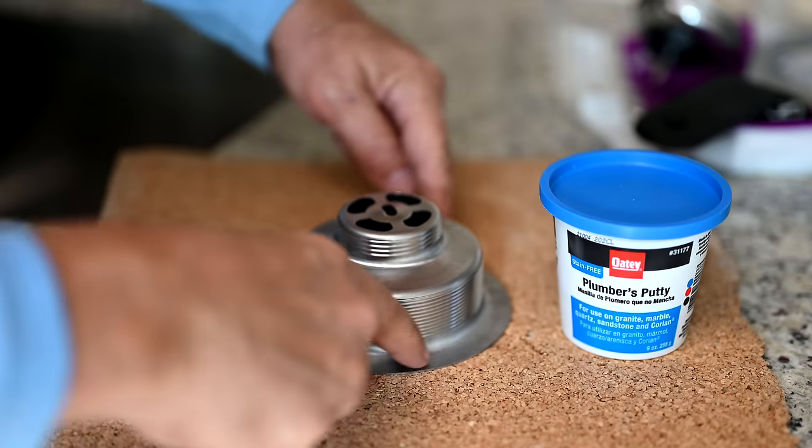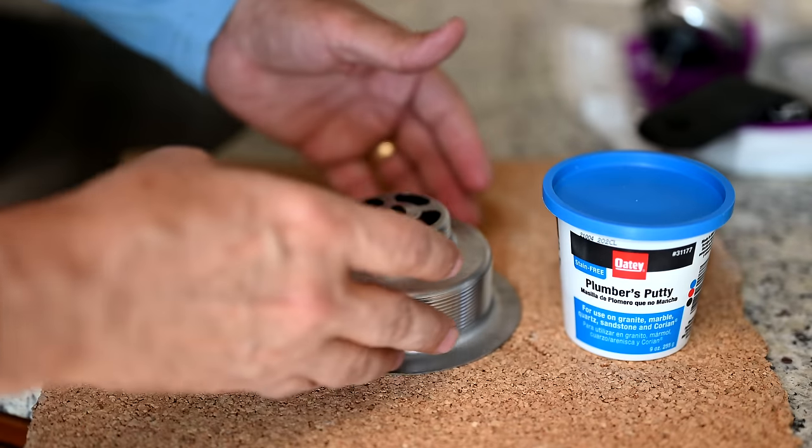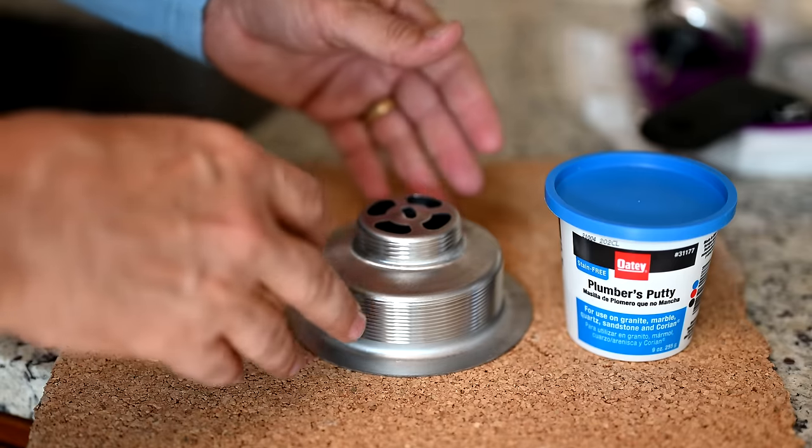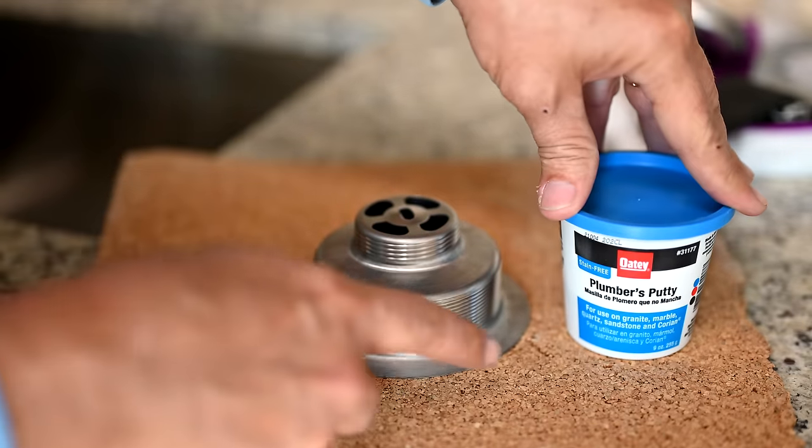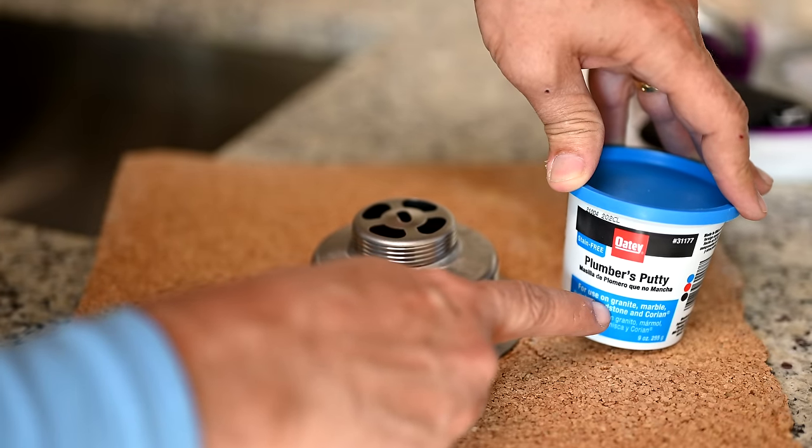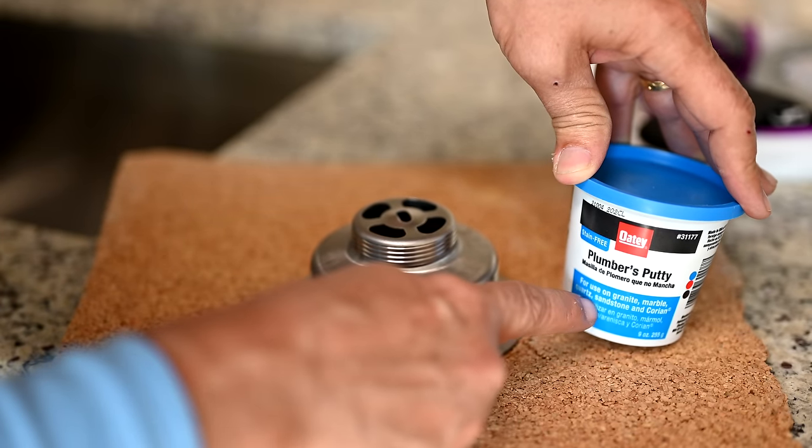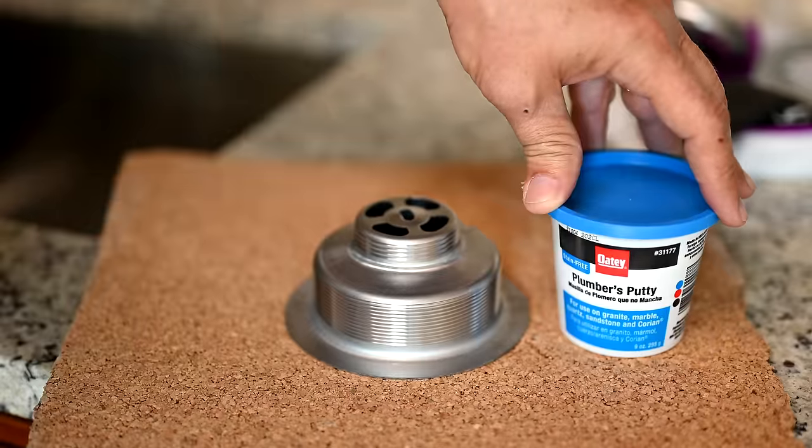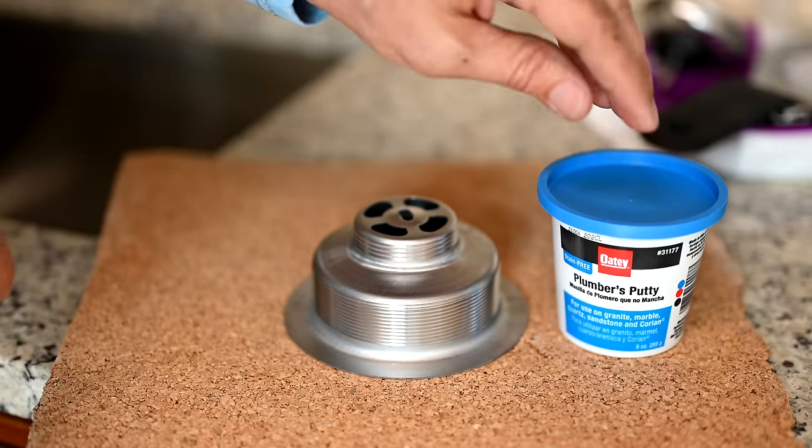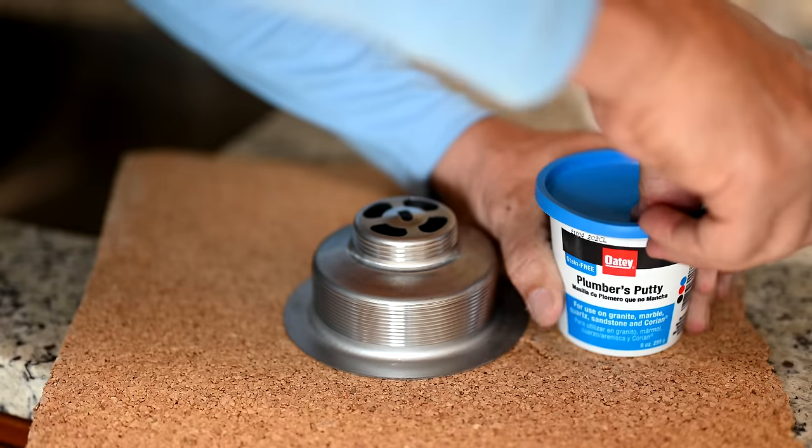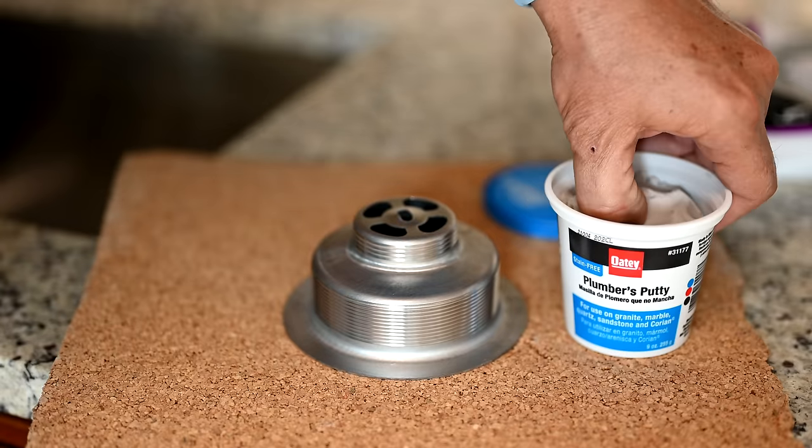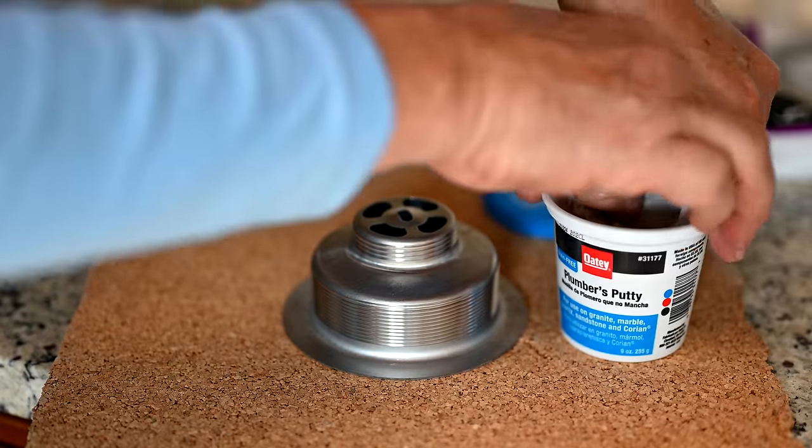Okay, so now we're going to apply the plumber's putty around here. Some people like to use silicone which is probably a better sealant. A lot of plumbers are old school and like the tried and true plumber's putty. I always buy stain-free. Make sure you get the plumber's putty that says for use on granite, marble, quartz, sandstone. Now we're using a stainless steel sink here so that's not a problem for us, but just in case as a fail-safe I always make sure I use this one - the stain-free. You never know what kind of sink you're going to be working on and you don't want to show up at someone's house or help a friend and find out you have the wrong type of putty.